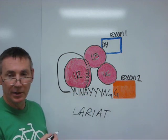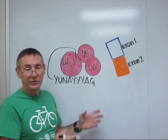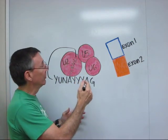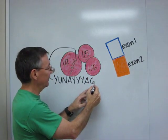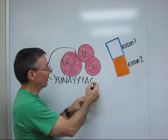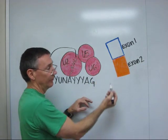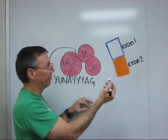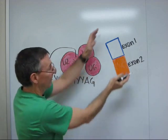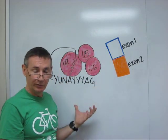The second transesterification is catalyzed by the C complex. In the second transesterification reaction, the C complex cleaves the bond at the three prime end of the intron, the acceptor site, cleaving the phosphodiester bond between that three prime end and the end of the second exon. And then it forms a phosphodiester bond between the two exons. They're now spliced together. The intron is released then in its lariat form.